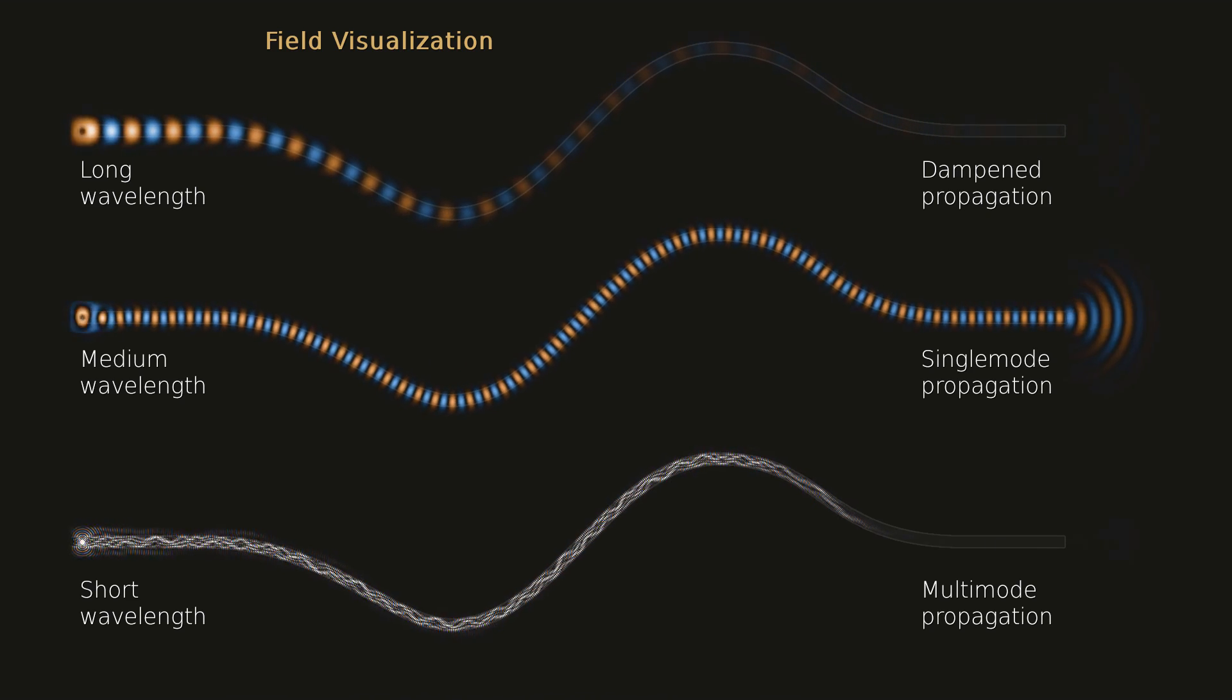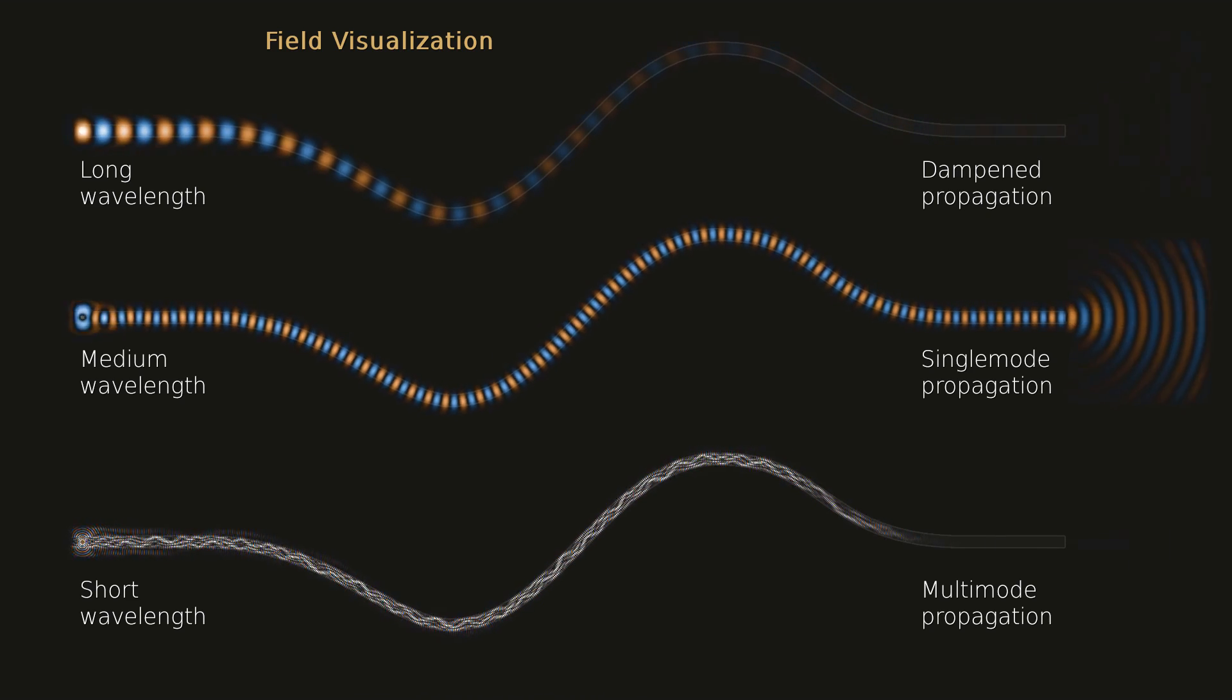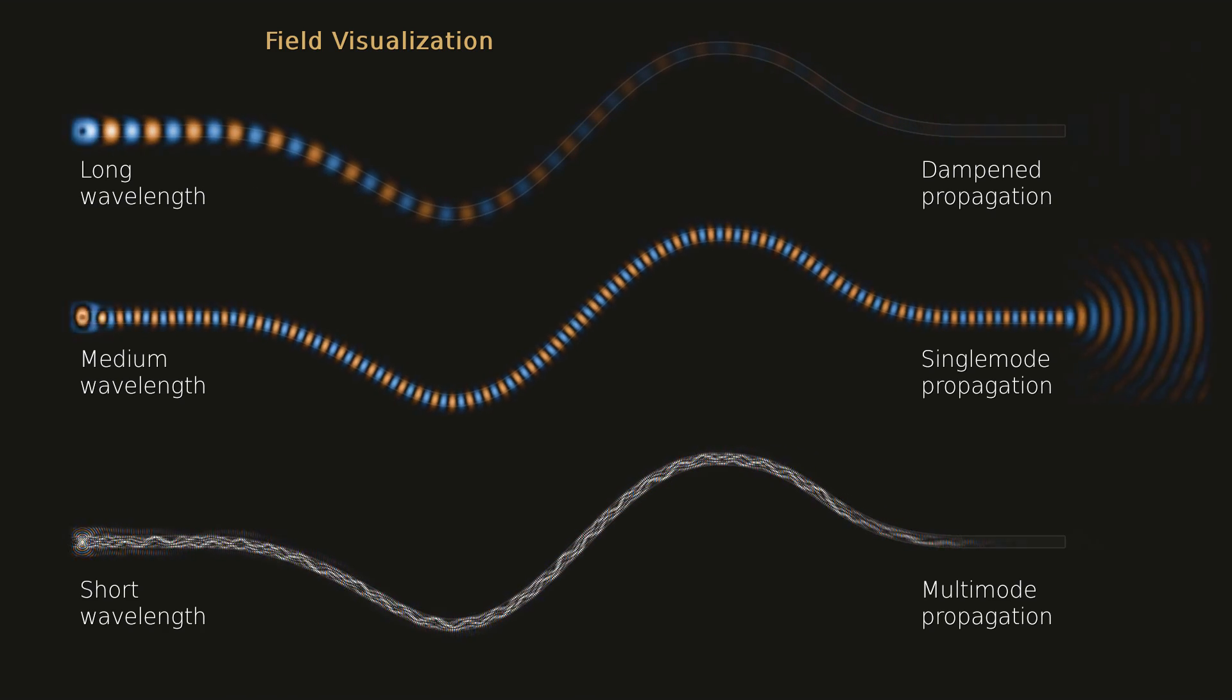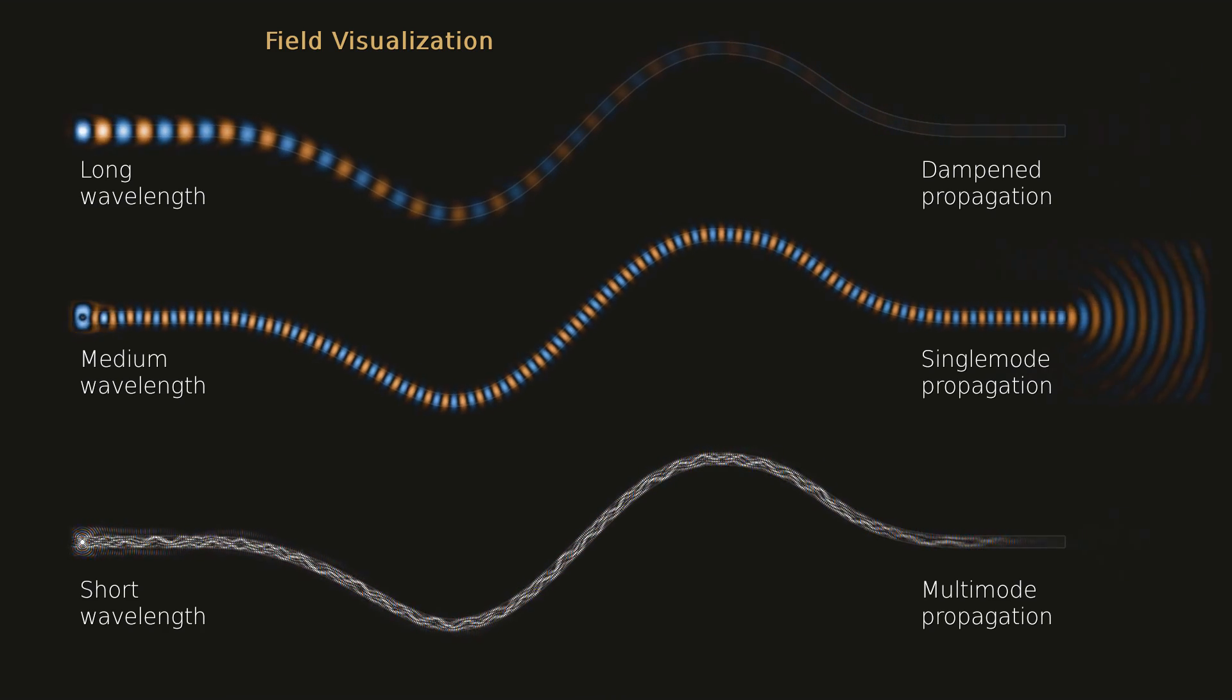In contrast, the bottom fiber operates in multimode regime due to the smaller wavelength. Because of the longer distance traveled, the light reaches the end of the fiber later than in the examples above.